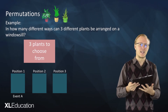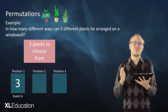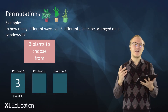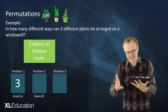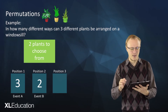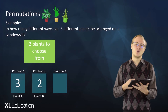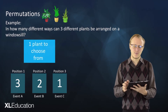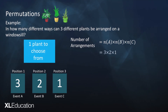Choosing the first plant for position one is event A — we have three plants to choose from, so there are three ways event A can happen. Once we've chosen a plant for position one, we only have two left, so event B has two possible ways. Then we only have one plant left for the third spot — event C — and there's only one way to do that. The number of arrangements is three times two times one, which equals six.